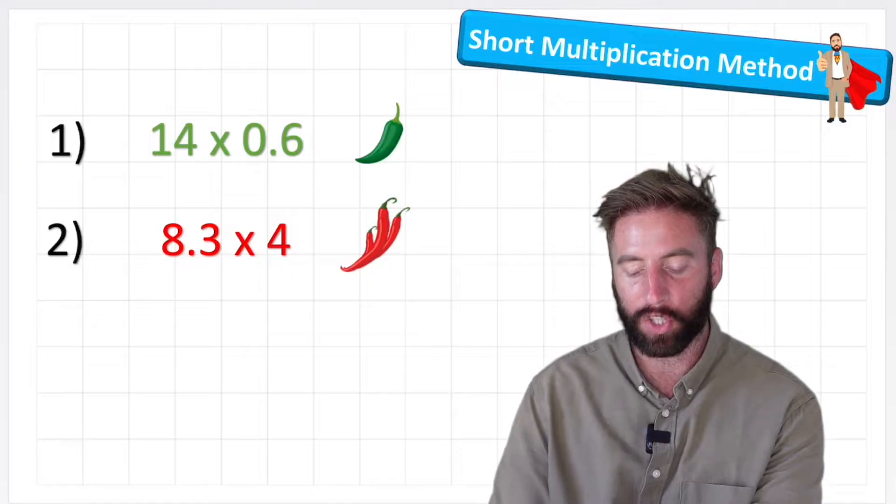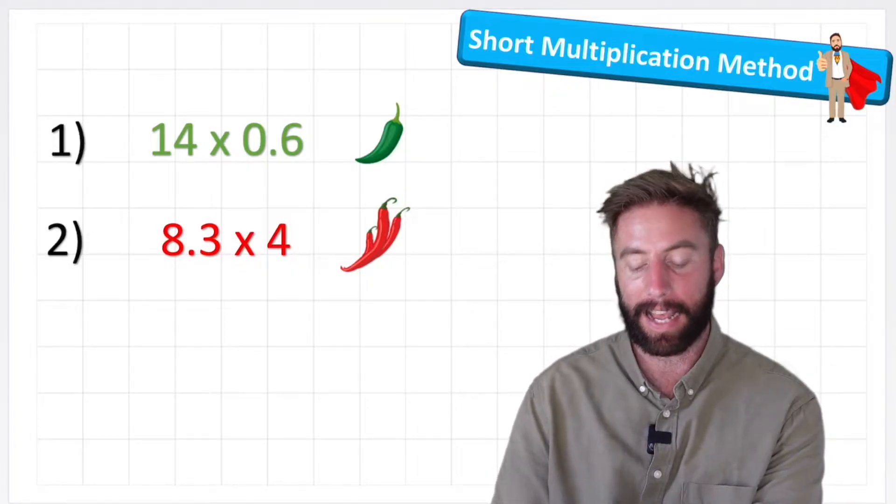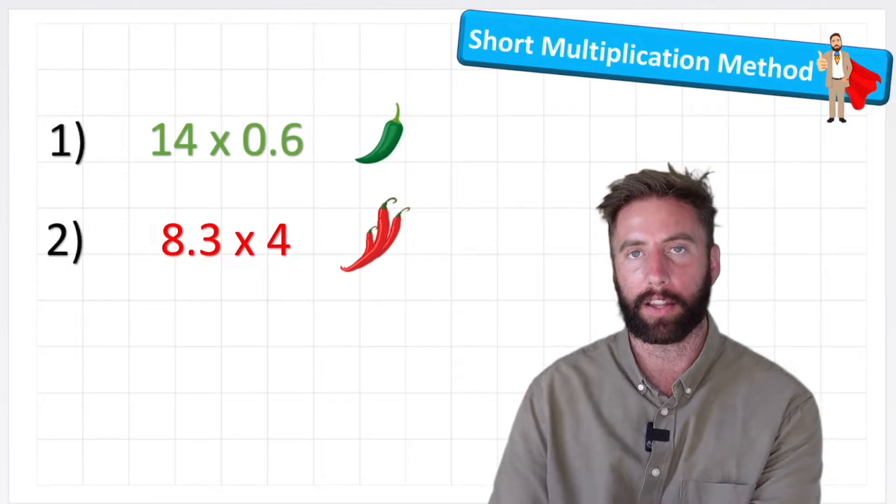Okay, so we're going to look at these two questions: 14 times 0.6 and 8.3 times 4, one slightly harder than the other.